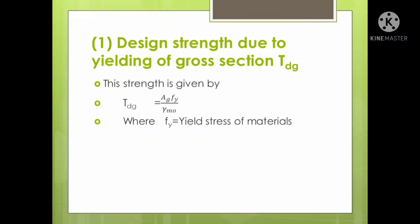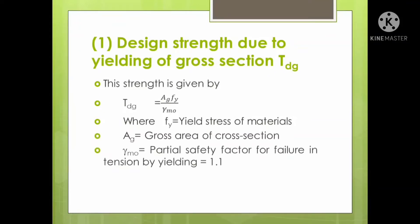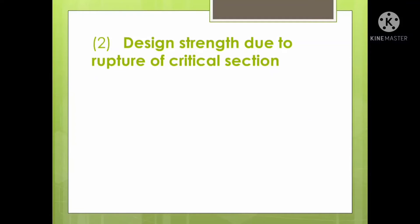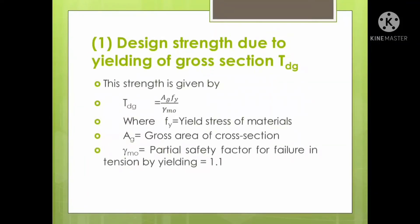For most problems, you will select FY as 250 N/mm². AG is the gross cross-sectional area. γMO is the partial safety factor for failure in tension by yielding, which is given by IS 800 as 1.1. This is the first design strength and how you have to calculate it.